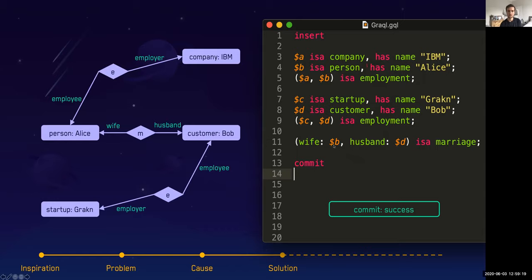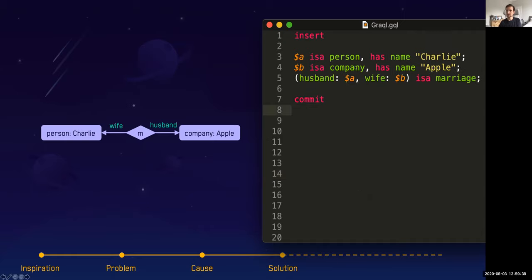Finally, can we marry a person with a customer? The answer is yes, because of the inheritance here. And then we say commit. That would succeed because it adheres to the schema. But let's say we want to marry a person to a company. That's not possible. Although I think many of us may feel like we do sometimes.